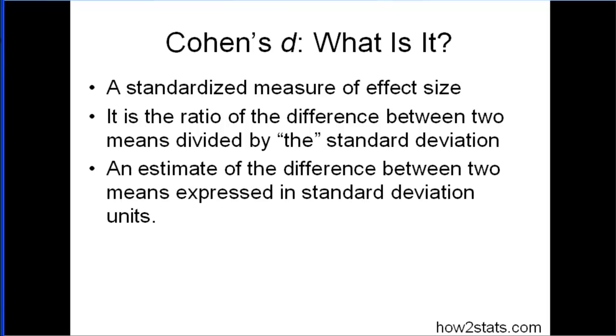Another way to say it is that it's an estimate of the difference between two means expressed in standard deviation units. The reason why this is important is that Cohen's D allows us to interpret the size of an effect that was found in a study that's independent of the scale that was used to make measurements.